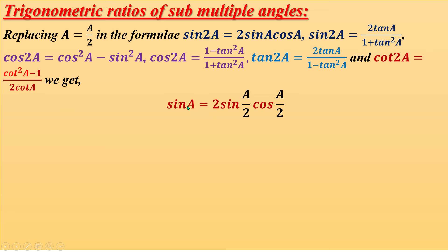We get sinA = 2sin(A/2)cos(A/2). Here, since A is replaced by A/2, the 2s cancel and we get sinA only, with A/2 inside. That means the angle here is half of this angle — here is 2A, here is A. Similarly, if here is 3A, here will be 3A/2. The angle is always half. Remember this always.